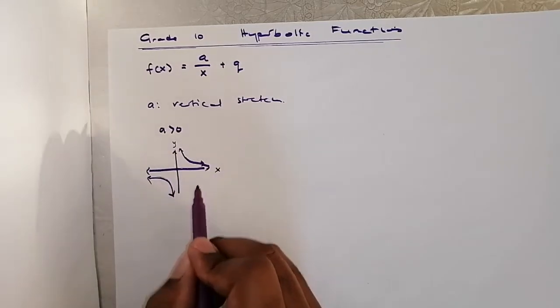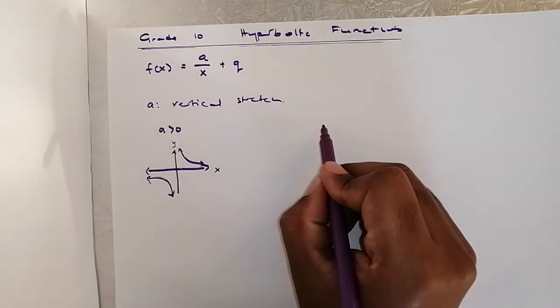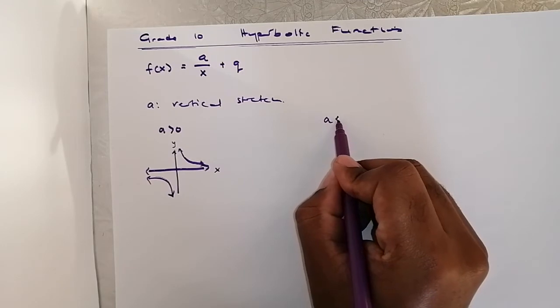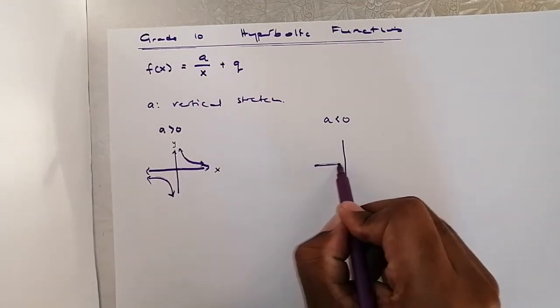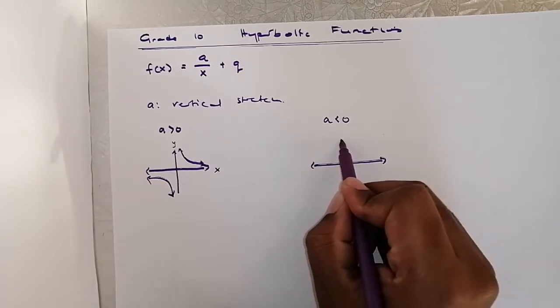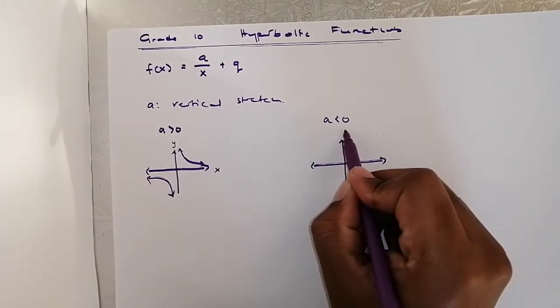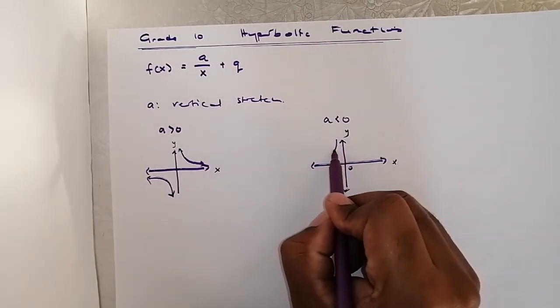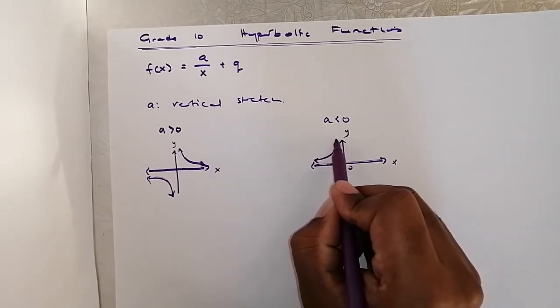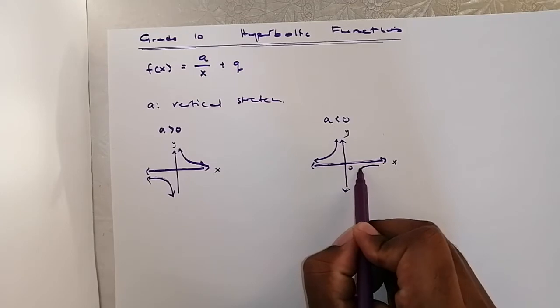This is y, this is x. And when a is less than zero, or in other words negative, the wings of the hyperbola will be on the second quadrant and the fourth quadrant.